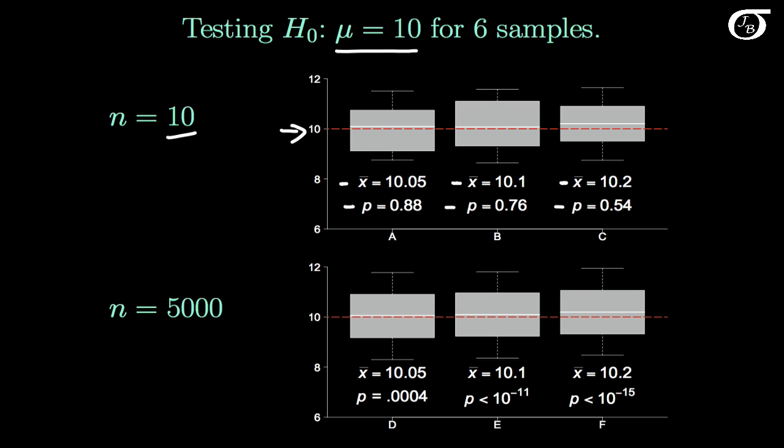In this second set of box plots, everything is exactly the same, other than the sample size is now 5,000 instead of 10. The sample means are all exactly the same as what they were above.